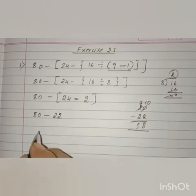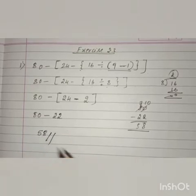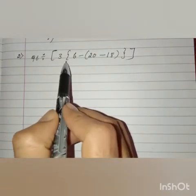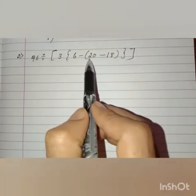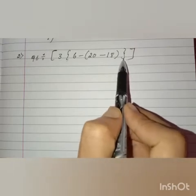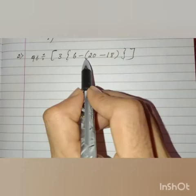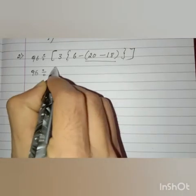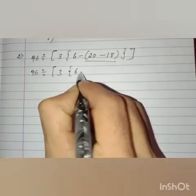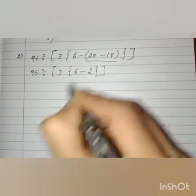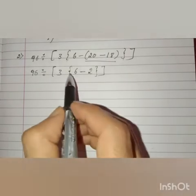The next question, number 2: 96 divided by big bracket open 3 curly bracket open 6 minus common bracket open 20 minus 18 common bracket close curly bracket close big bracket close. First we have to remove the common bracket, so we do the operation. Remaining as it is: 20 minus 18 is 2.